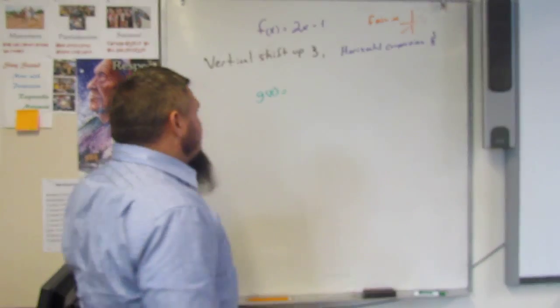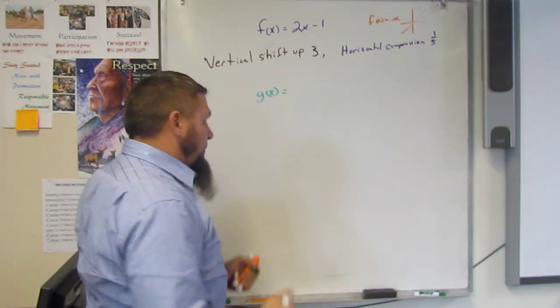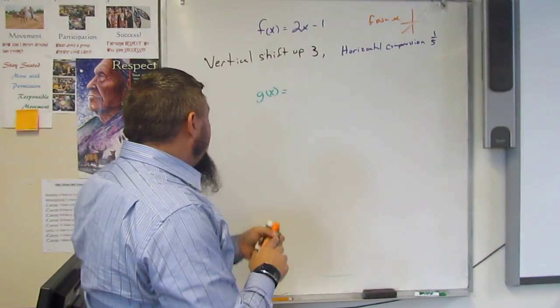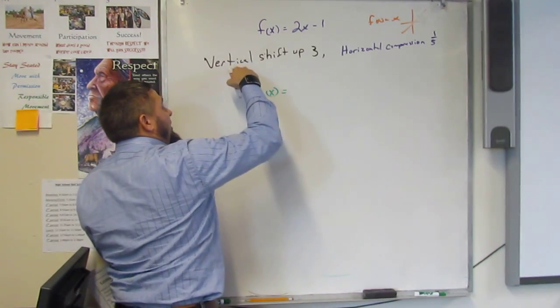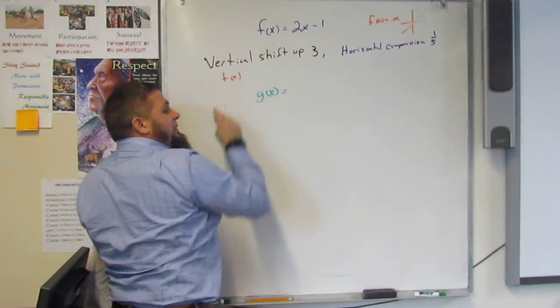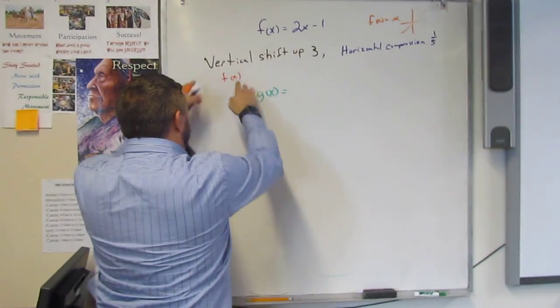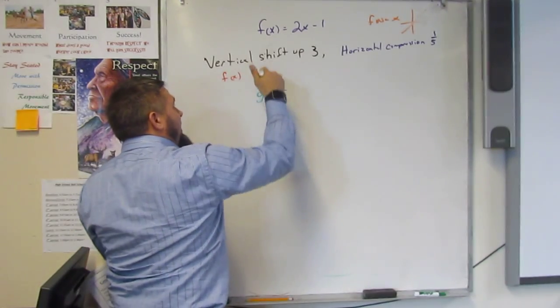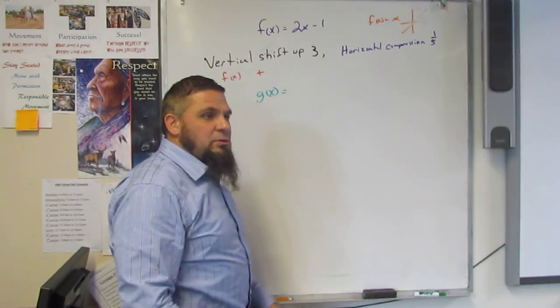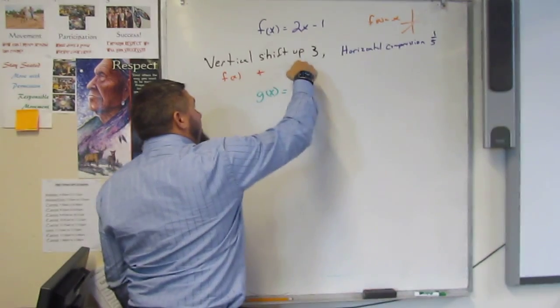In this case, we're doing a vertical shift up. And a vertical shift up, we have to know what that means. So the whole function is what vertical means. So that's the whole function f of x. And then shift means plus. Shift always means plus. Up means plus.